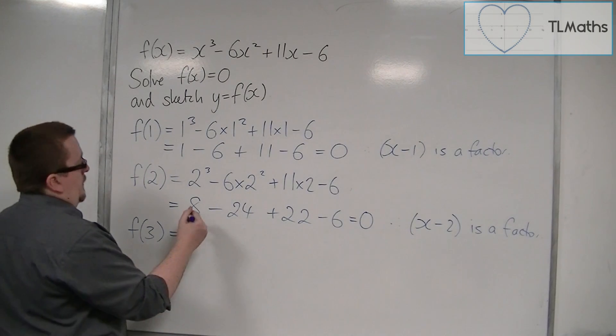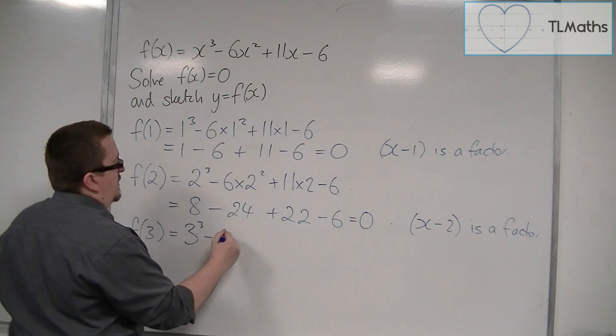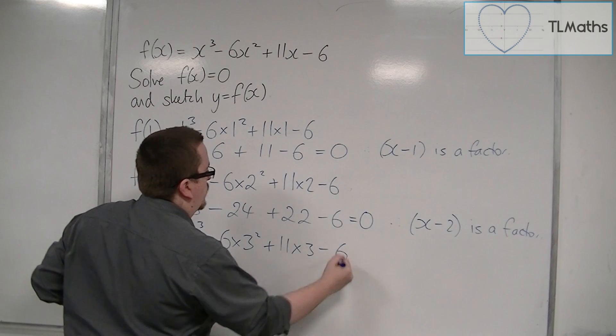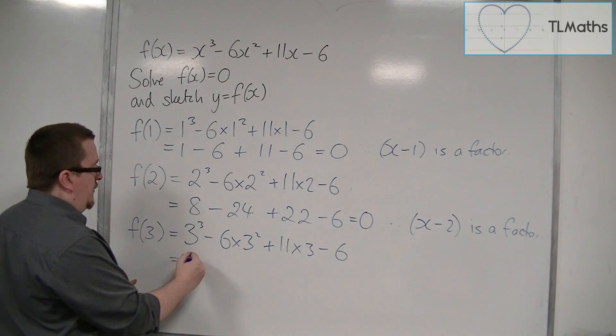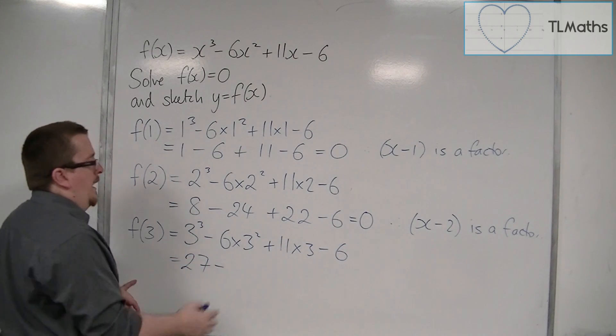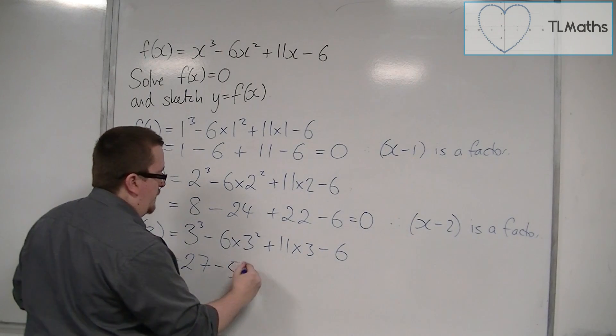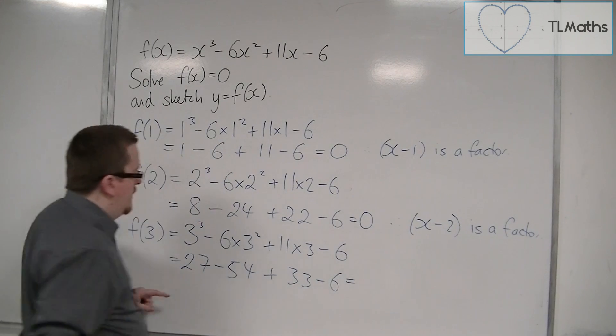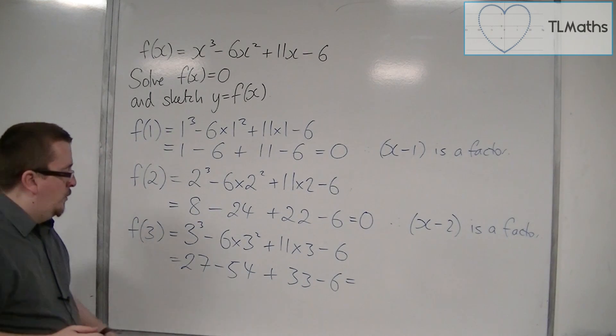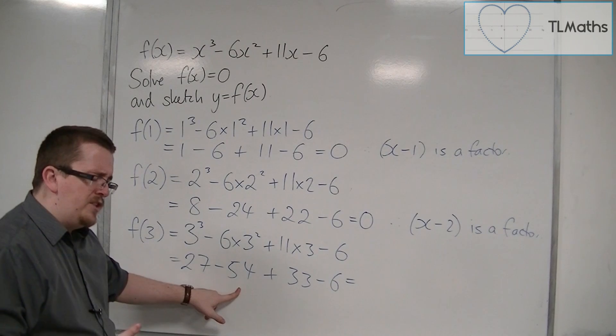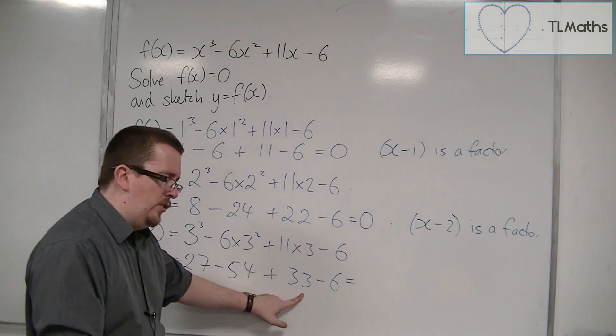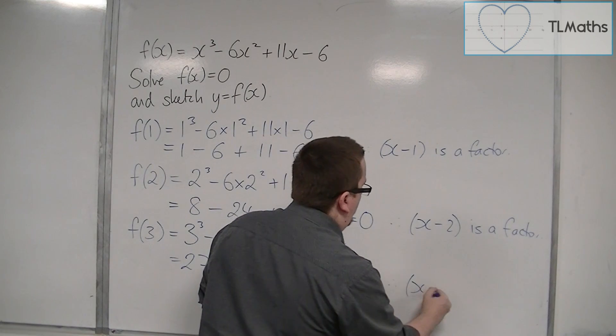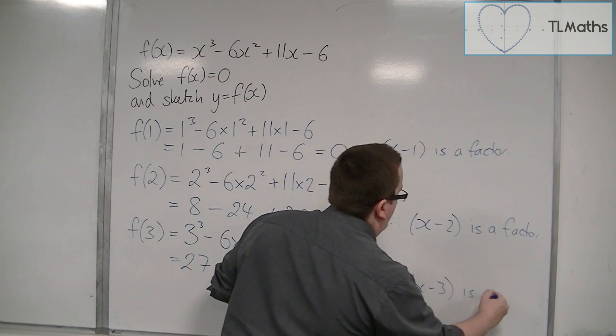So f of 3 is 3 cubed take away 6 lots of 3 squared plus 11 lots of 3 take away 6. So that's 27, that's 9, so 6 9's are 54, plus 33 take away 6. So 27 take away 54 is minus 27, plus 33 is 6, take away 6 is 0, therefore x minus 3 is a factor.